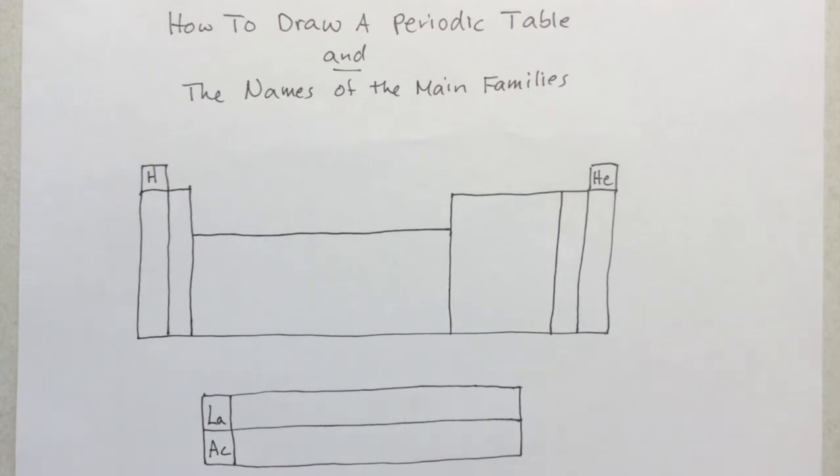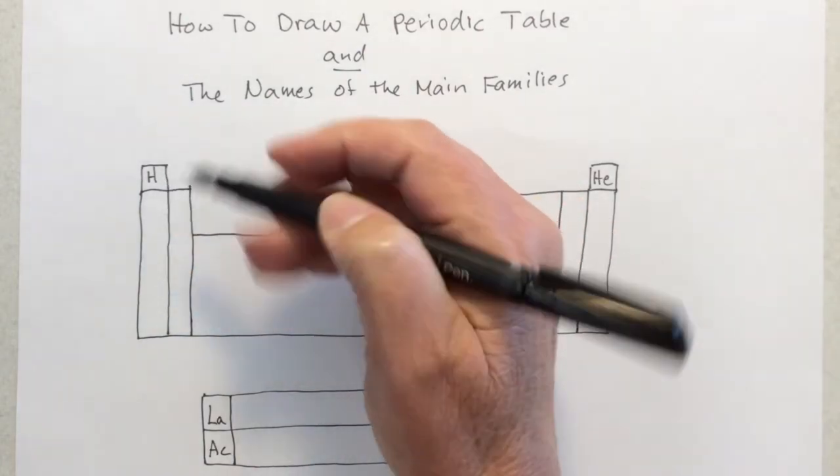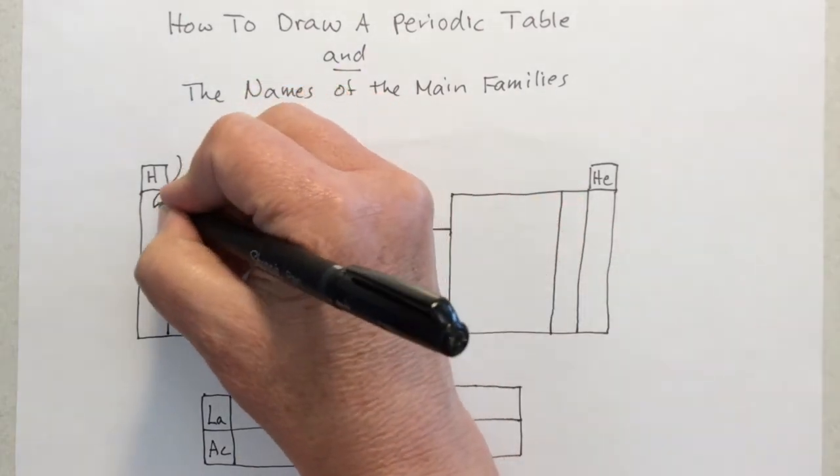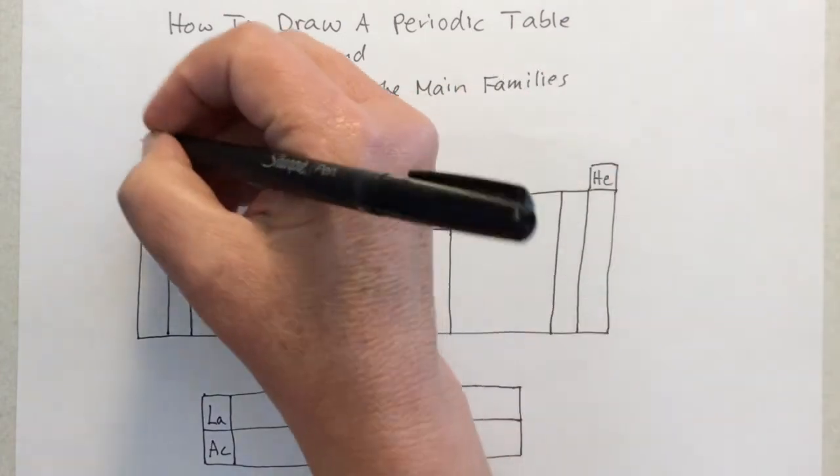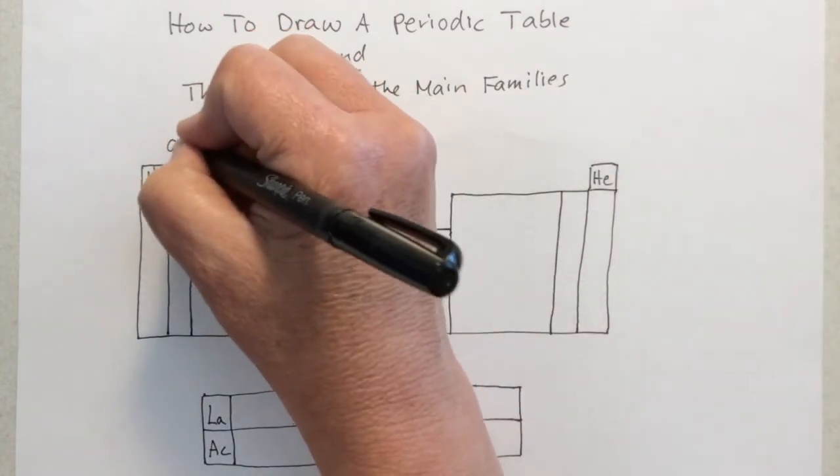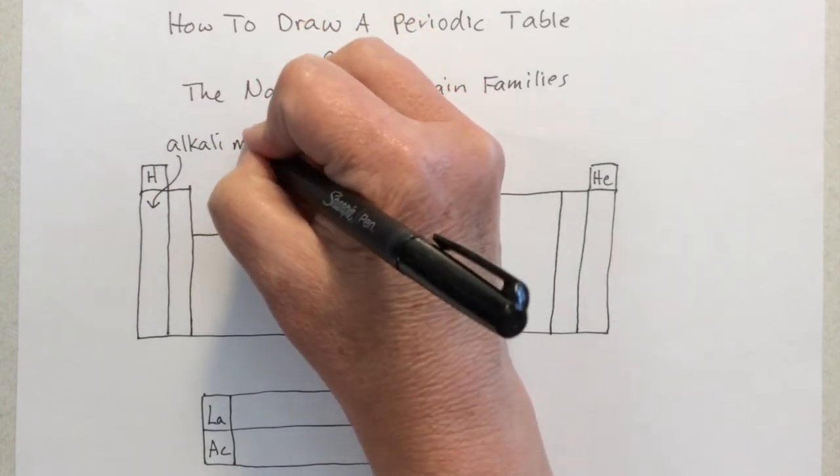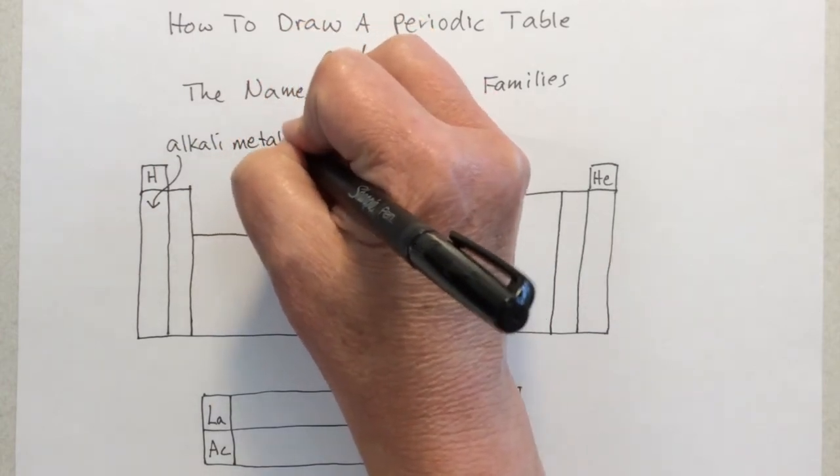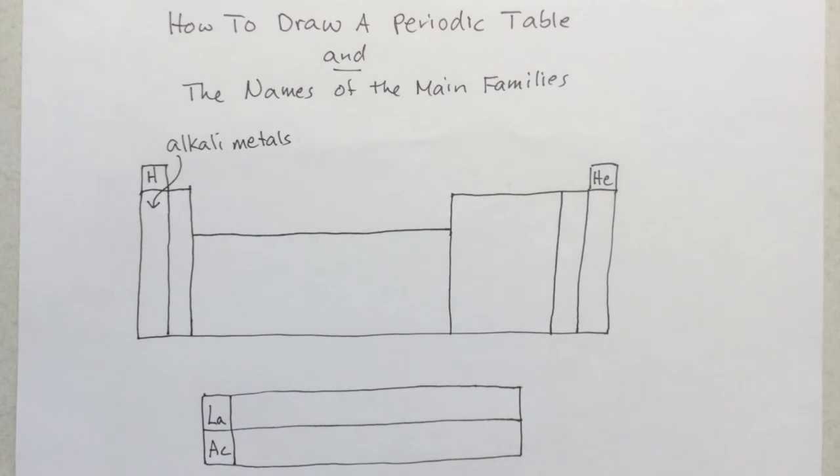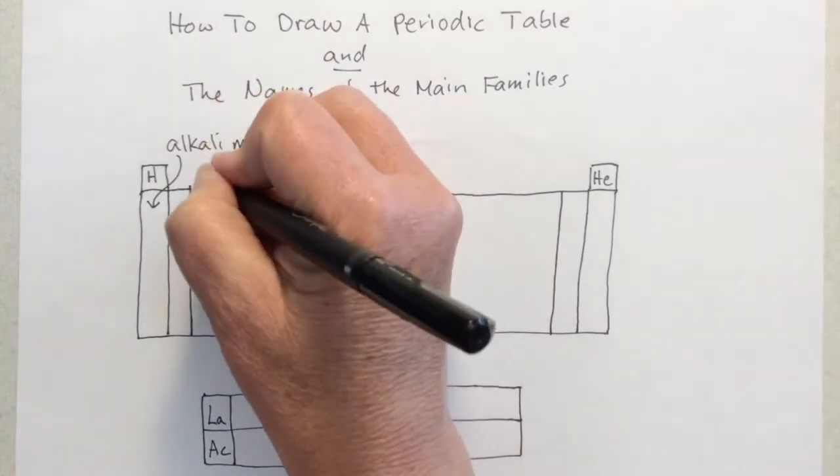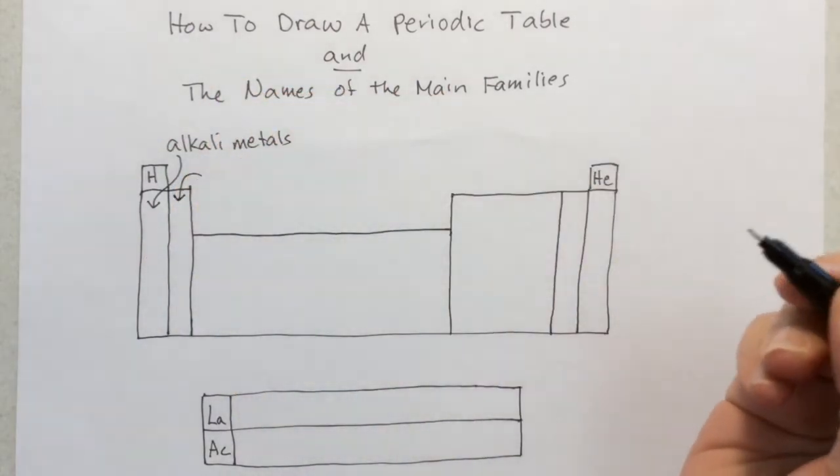Now let's name the families. Underneath hydrogen, all the way down here, and it's actually starting with lithium, we've got the alkali metals. Alkali means basic, like a really dangerous chemical basic, and those are very important. Next door, because they make alkali compounds, are alkaline earth metals.